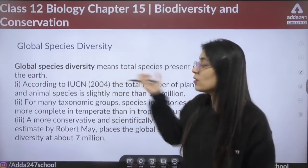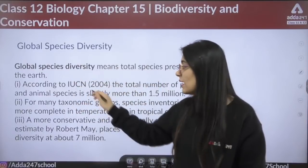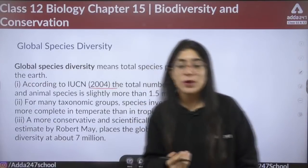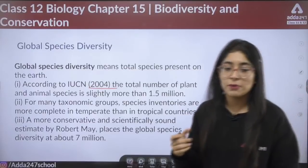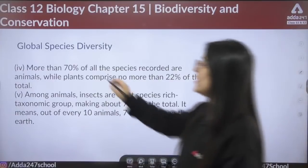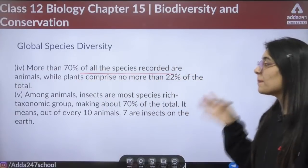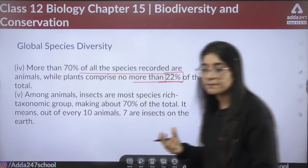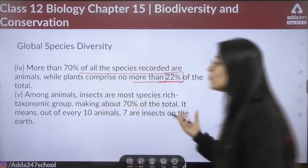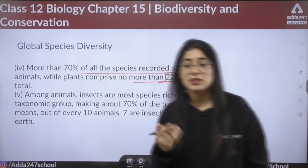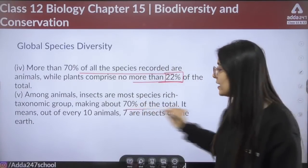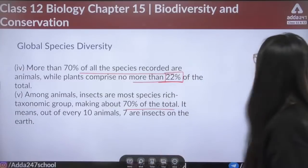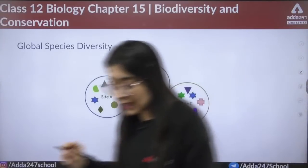At the global species diversity level, it is the total species present on Earth. In 2004, it was estimated that the total number of plant and animal species is more than 1.5 million. More than 70 percent of recorded species are animals, while plants comprise more than 22 percent. Among animals, insects are the most species-rich taxonomic group, making up about 70 percent of the total.